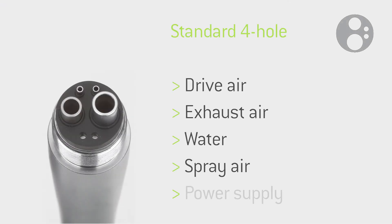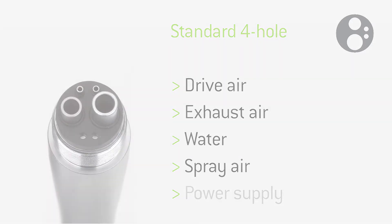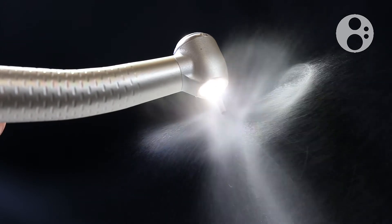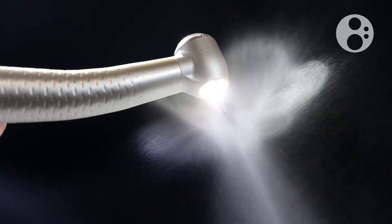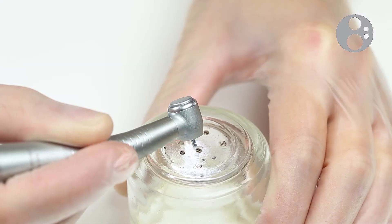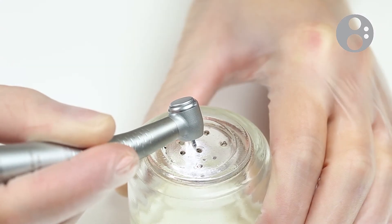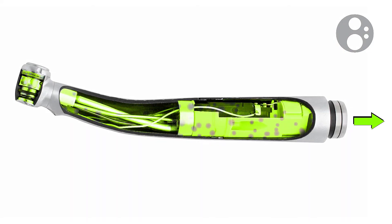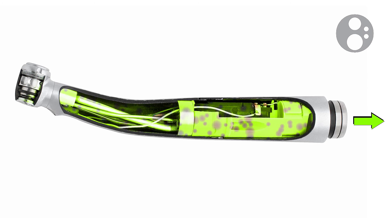The standard four-hole connection has tubes for drive and exhaust air as well as separate spray connections. The amount for the spray can be adjusted separately and set to the user's needs for both water and air. The complete pressure is available for the drive air because air no longer has to be separated for cooling. The removal of the exhaust air means that no air output can be felt by the user of the turbine or air motor, and this air does not come into contact with the treatment site either.